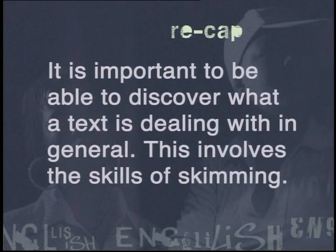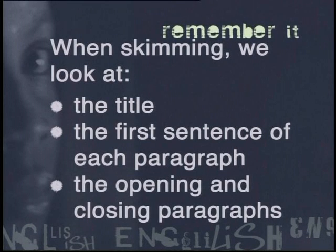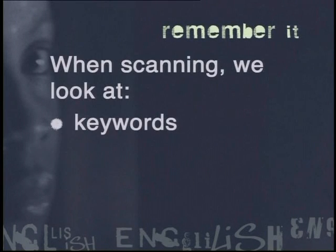Let's summarize what we have covered in this lesson. It's important to be able to discover what a text is dealing with in general — this involves the skill of skimming. Your eyes will skip through the passage in the same way as a stone skims and hops over water, and you will get a general idea of the article by noticing little bits of it. When skimming, we look at the title, the first sentence of each paragraph, and the opening and closing paragraphs. When we want to find a particular piece of information, we scan. When scanning, we look at keywords, names, and dates.